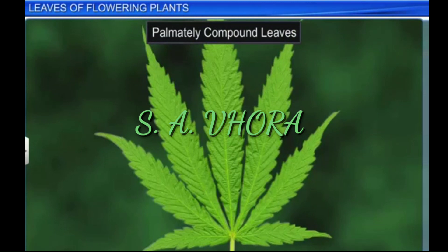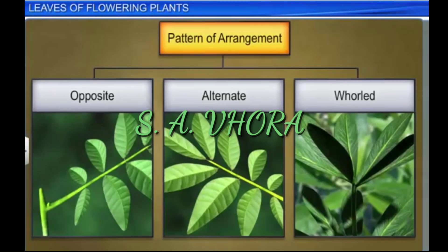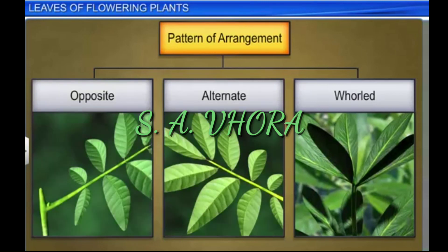Apart from being classified as simple and compound, leaves are also divided into opposite, alternate, and whorled on the basis of the pattern of arrangement on a branch. This system is called phyllotaxy, and it is of three types: alternate, opposite, and whorled.